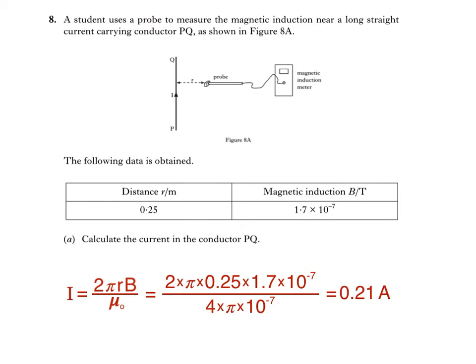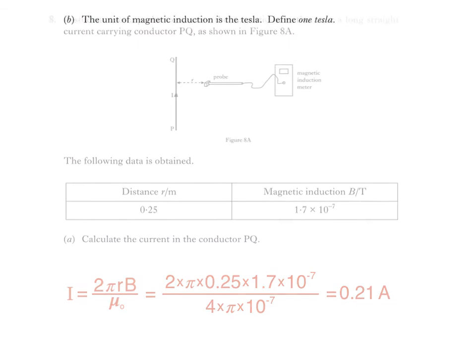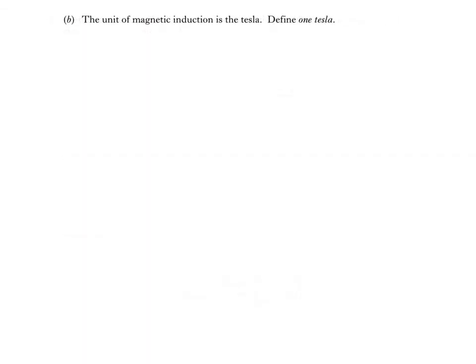Part B says the unit of magnetic induction is the Tesla. Define one Tesla. Unless you have a wonderful memory and can just remember this definition, it helps to have a starting point to work from, and here it is.